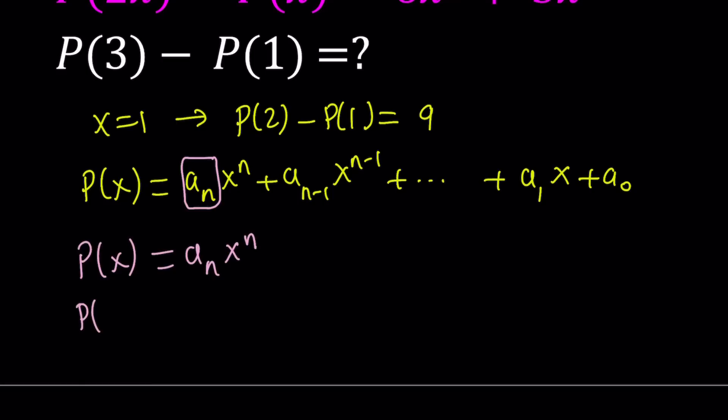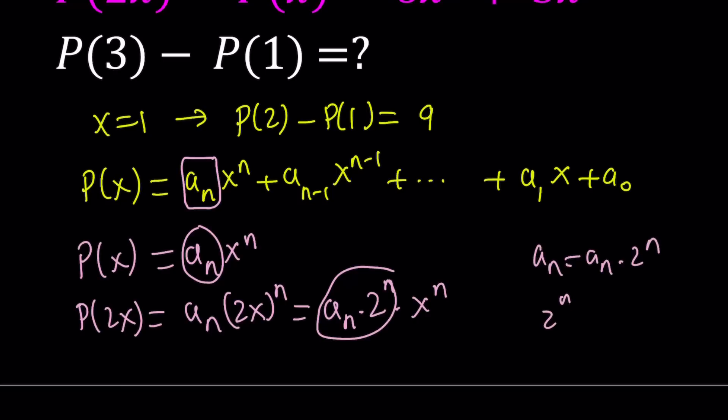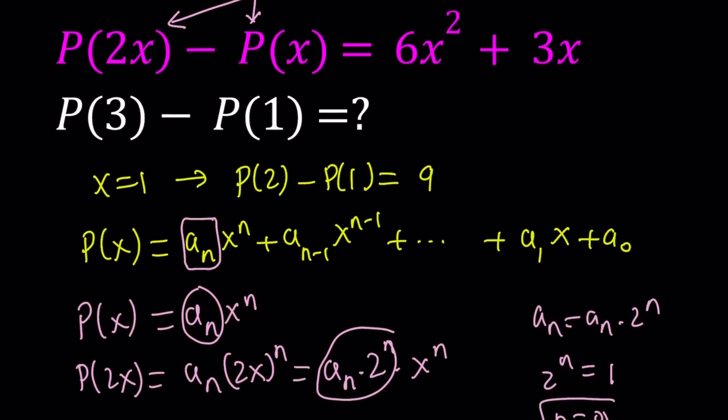So, think about P of 2x. You can write it as a sub n, 2x to the power n. And then you can basically write this as a sub n times 2 to the power n times x to the power n. In this case, you notice that these two have to be different unless they are equal. So, how can they be equal? Well, if they're equal, that means 2 to the power n is equal to 1, which means n is equal to 0. But if n is equal to 0, then you're talking about a constant polynomial, and the difference of two constant polynomials can never be a quadratic polynomial.